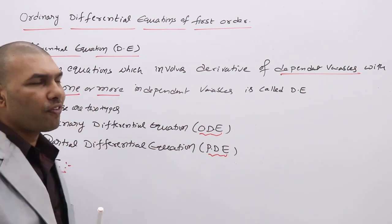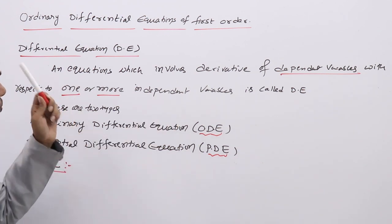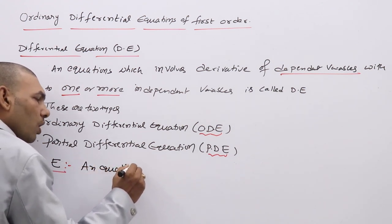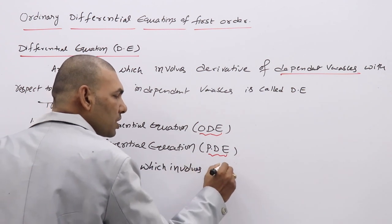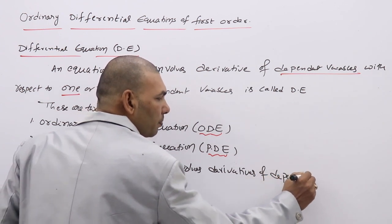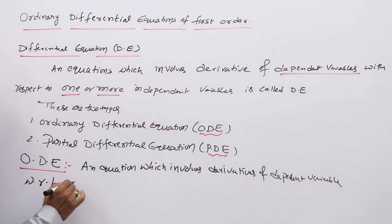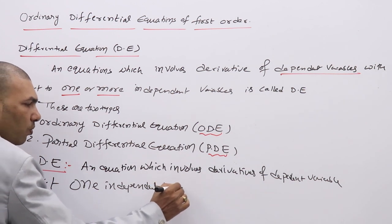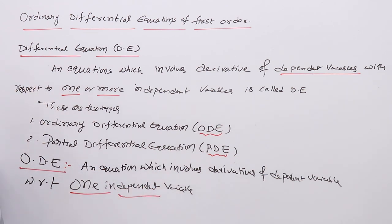ODE is one type of differential equation — an equation which involves derivatives of a dependent variable with respect to only one independent variable. Here we have one dependent variable and one independent variable. That type of DE is called an ordinary differential equation.